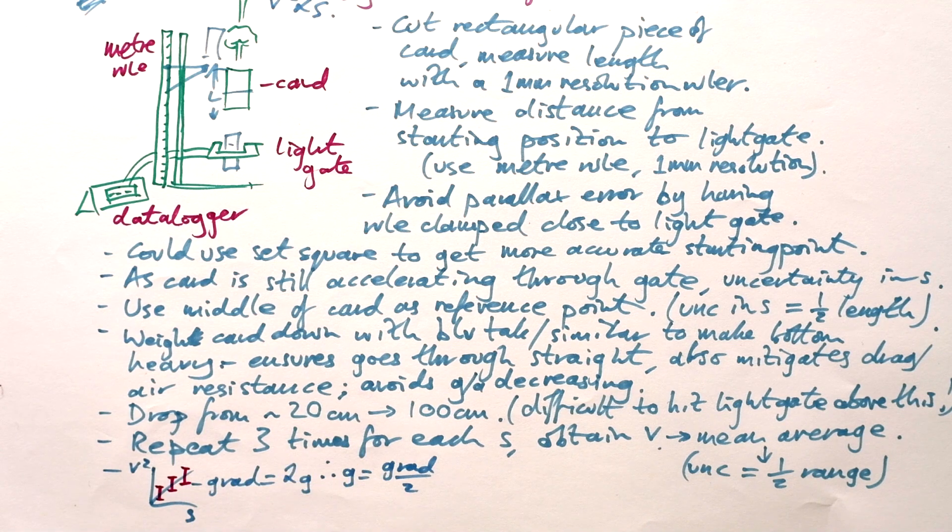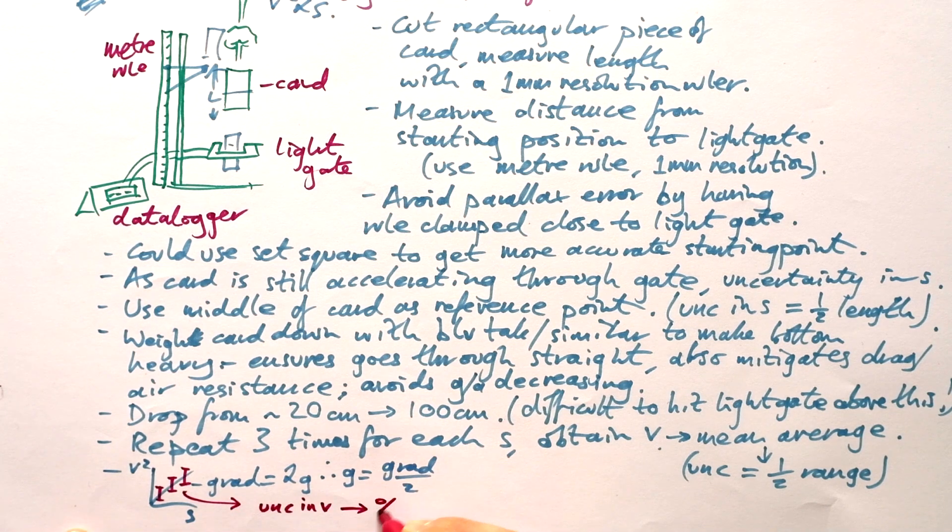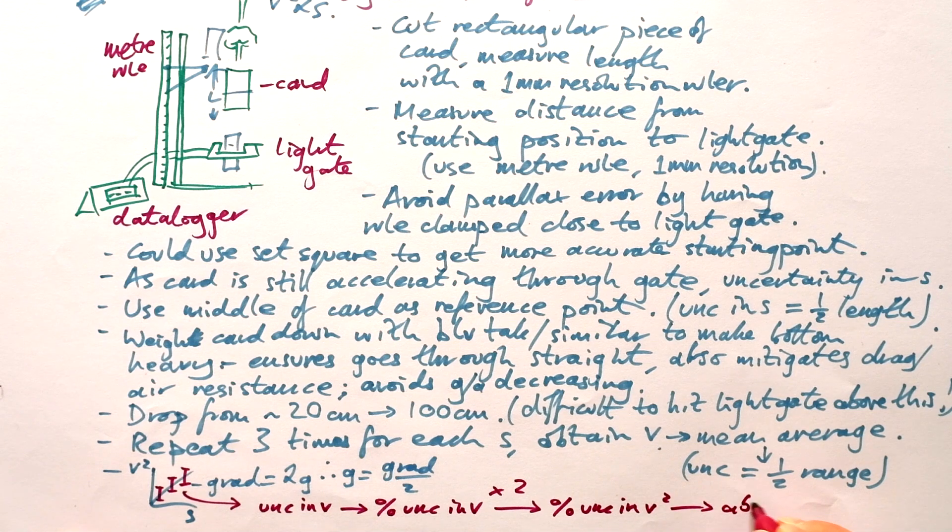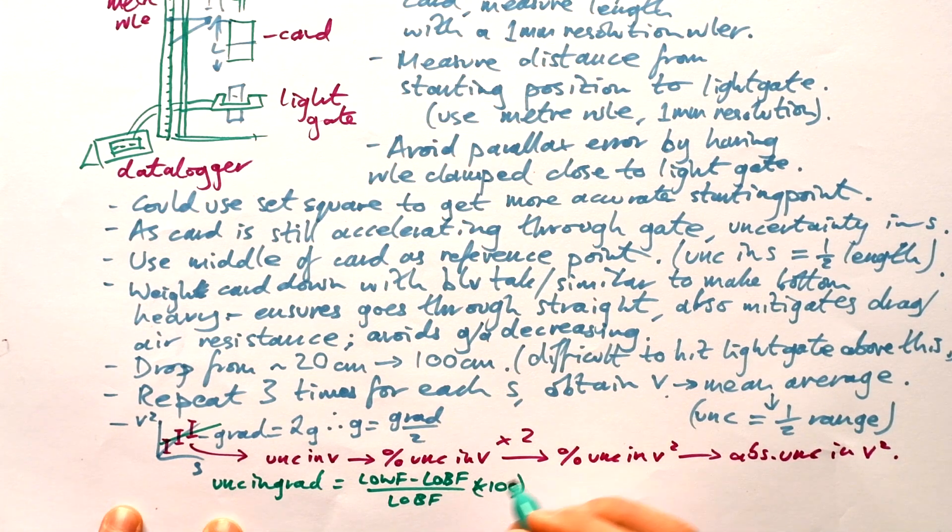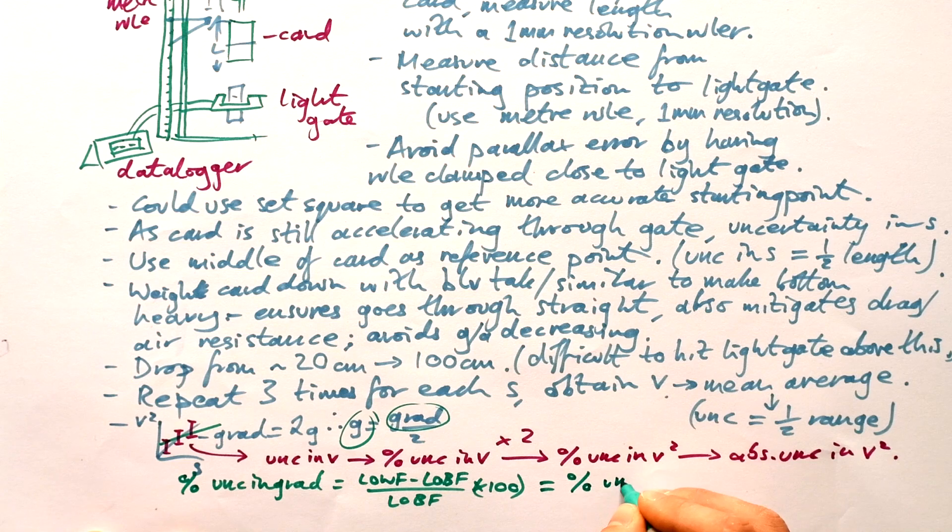Obviously we can plot error bars on our graph. What are we going to plot on that? Well, we said that the uncertainty in V, we want to turn that into a percentage uncertainty in V, double to get our percentage uncertainty in V squared. And then finally, we turn that back into an absolute uncertainty, just your normal uncertainty in V squared. And then that's what we're going to plot. Then we can do line of worst fit. So we can say uncertainty in gradient is equal to line of worst fit, take away line of best fit, divided by line of best fit times 100. And then because we have an uncertainty in our gradient, we're just divided by two, that's going to be the same as the percentage uncertainty in g.